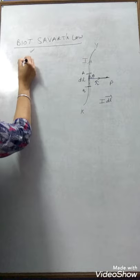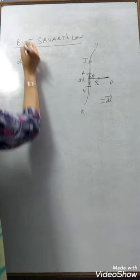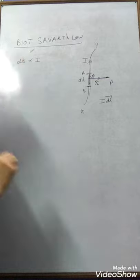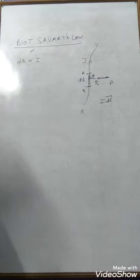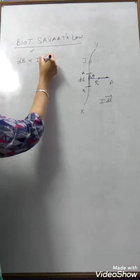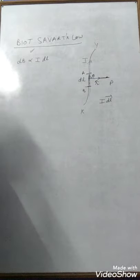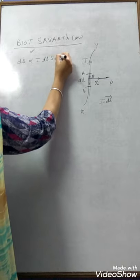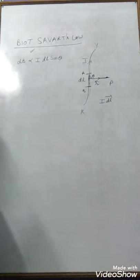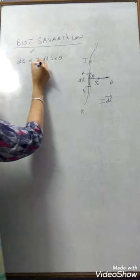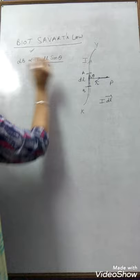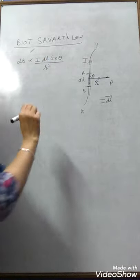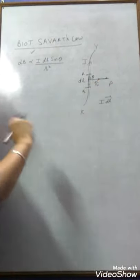The small amount of magnetic field dB is proportional, according to this law: directly proportional to the current, directly proportional to the current element length, and directly proportional to the sine of the angle between the current element and the point of observation. But it is inversely proportional to the square of the distance between the observation point and the center of the current element. This is Biot-Savart's law.